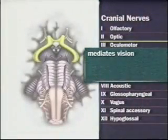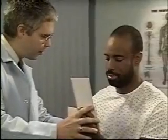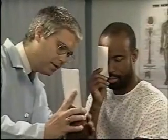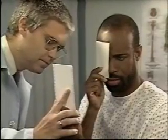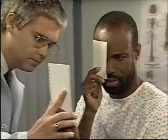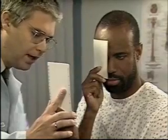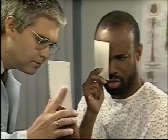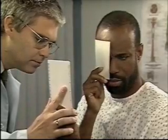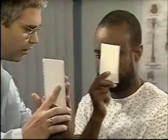Cranial nerve 2, the optic nerve, mediates vision. To assess its function, check the patient's visual acuity and visual fields and inspect the optic fundi. If a Snellen chart is not available, test visual acuity by using a special hand-held eye card. Ask the patient to cover one eye, hold the card about 14 inches away from his eyes, and read aloud the smallest print possible. If the patient requires reading or general-purpose glasses or contact lenses, he should wear them. Then test the other eye.